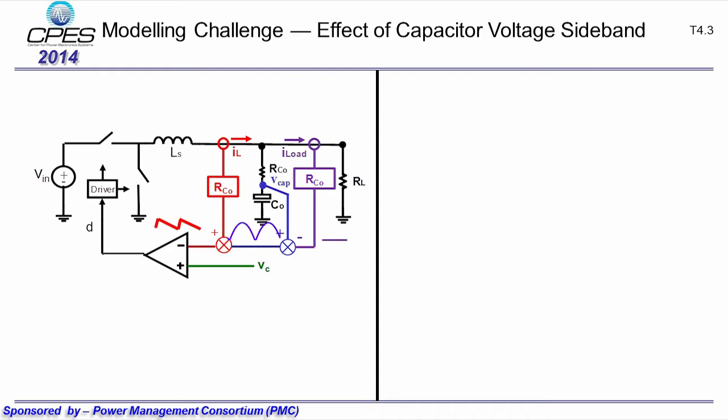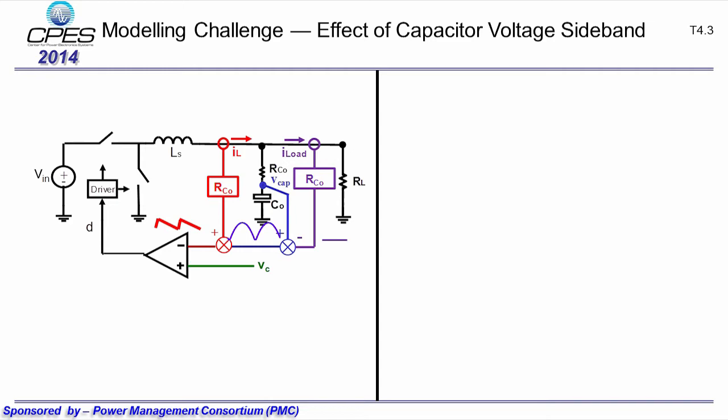The new challenge for modeling V-square control is that not only the inductive current ripple participates in modulation, but also the capacitor voltage ripple. As a result, if there is a modulation on the control signal, not only the sidebands of the inductive current loop need to be considered, but also the sidebands of the capacitor voltage loop. Up to now, there is no equivalent circuit model that takes capacitor voltage sideband into consideration.